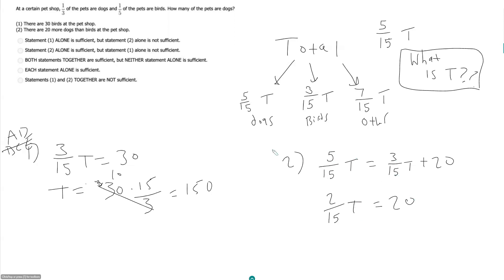And so once again, this is going to be sufficient. So our answer is going to be D. Let's see if we get T is equal to 150 again. We should. So T should be equal to 15 over 2 times 20. 20 over 2 is 10. 150.